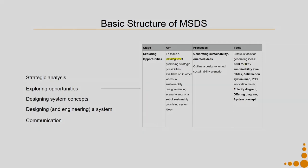In order to achieve this in the exploring opportunities stage, the processes involved are generating sustainability-oriented ideas using the SDO toolkit. We then outline a design-oriented sustainability scenario once idea generation is complete. Once all the ideas are generated, we are ready to create scenarios — the bigger concepts. We combine a couple of ideas and try to build certain sustainability design-oriented scenarios, potentially coming up with 3 to 4 different scenarios that combine many of these ideas.